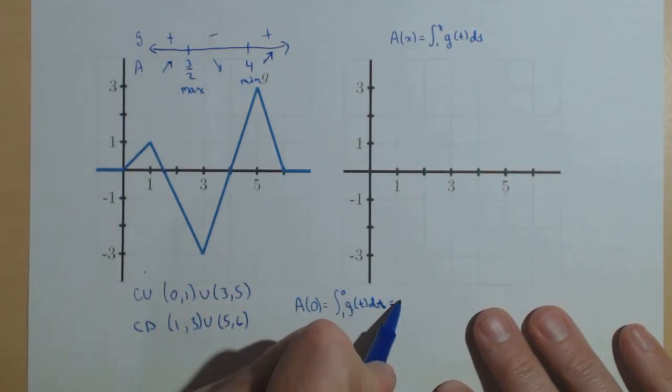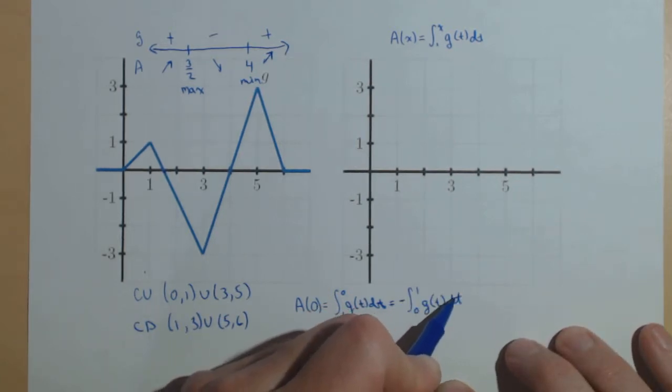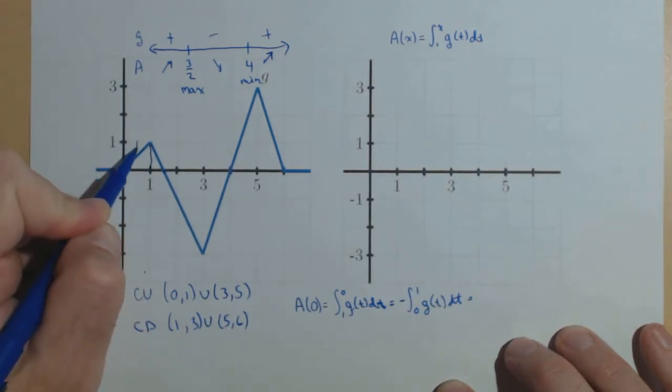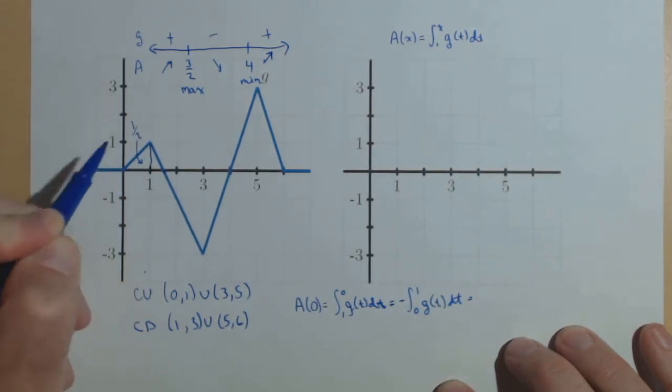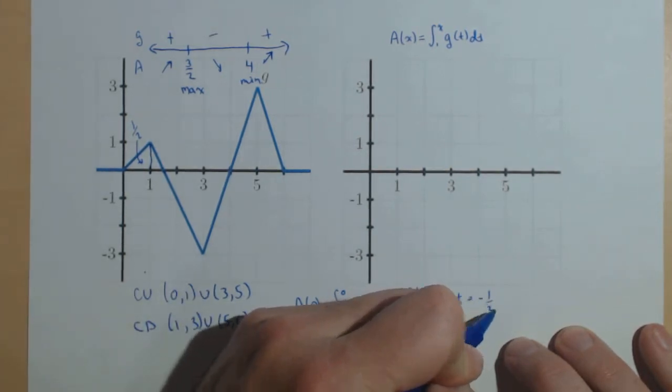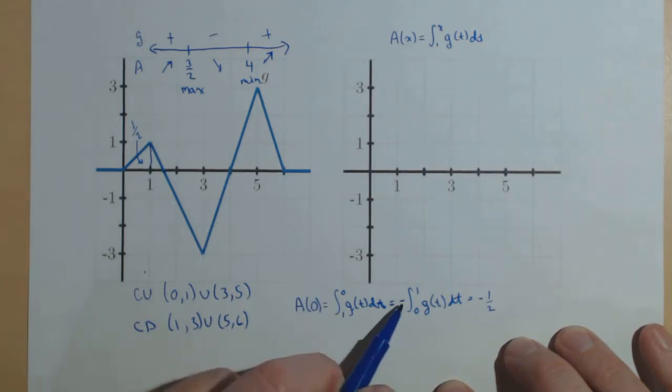Now, remember, from our property of integrals, that's negative the integral from 0 to 1 of g of t dt. So, 0 to 1 is this triangle right here with an area of 1 half. So, this is actually negative 1 half for a of 0 because we had to swap our limits.